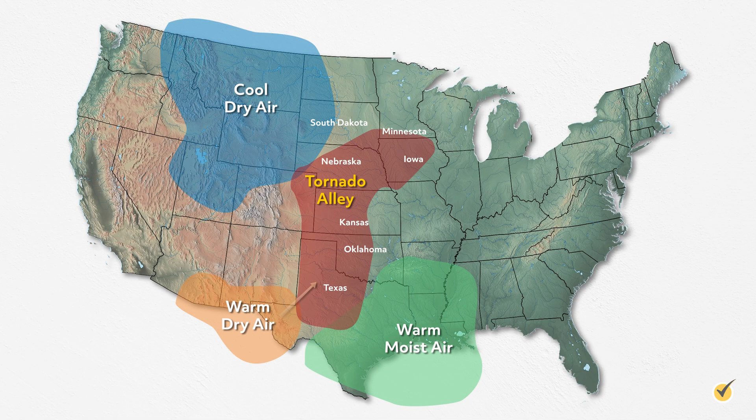Now let's talk about Tornado Alley. Earlier I mentioned the convergence of air being the reason that tall cumulonimbus clouds form, and the location of Tornado Alley provides near-perfect conditions for this phenomenon. This area, consisting mainly of Texas, Oklahoma, Nebraska, Kansas, and South Dakota, is situated directly between two converging air masses. Warm, moist air is brought northward from the Gulf of Mexico, while cool, dry air flows southward from Canada. When these two air masses come together, there's nowhere for them to go but up. The upward movement results in very tall clouds, and with the right wind conditions, supercells and tornadoes are more likely to spawn.